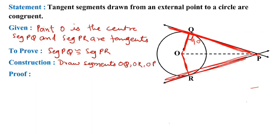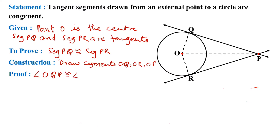PR is a tangent, so it will form a right angle with radius OR. Therefore, angle OQP and angle ORP are both right angles. In the proof we write: angle OQP is congruent to angle ORP, because both have the same measure of 90 degrees, according to the tangent theorem.